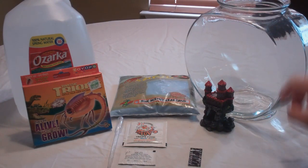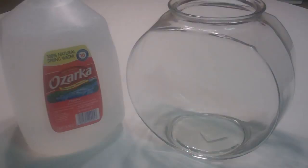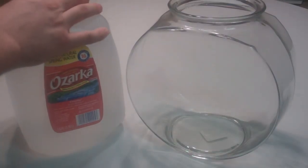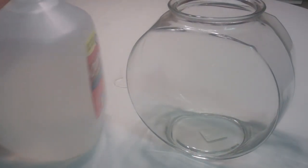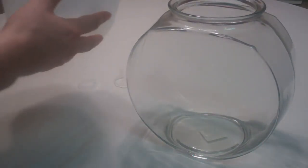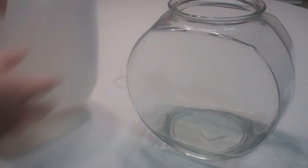We're going to begin with rinsing out the tank with some spring water. I'm going to pour just a little bit into the tank to rinse it out. I'm going to give it a nice little shake just to rinse it out. And I'm just going to pour this into the sink.